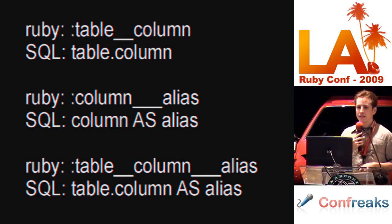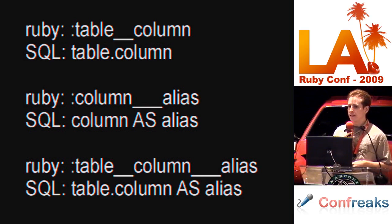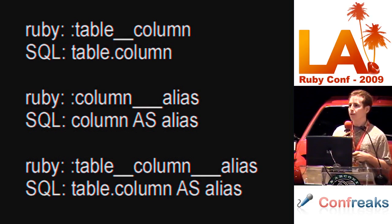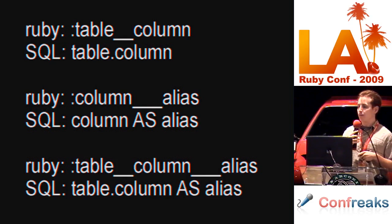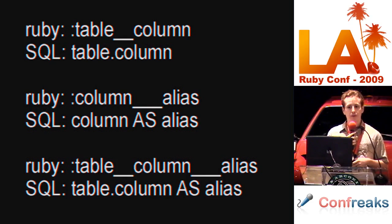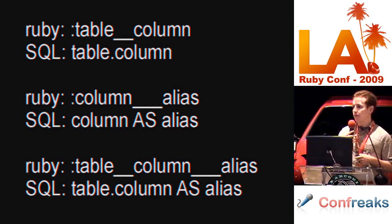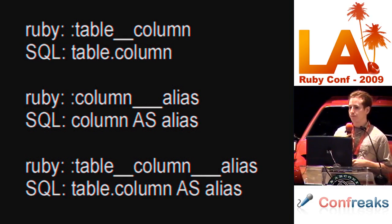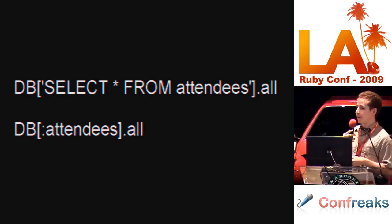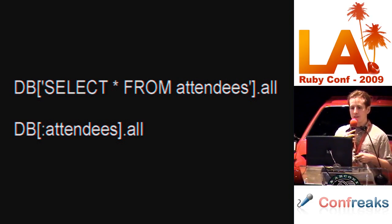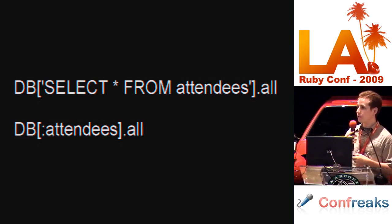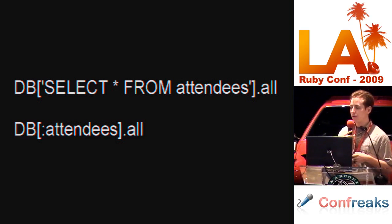Sequel code is very concise. One trick Sequel uses is that it allows you to use a single symbol to contain both the table and the column by separating them with a double underscore. It also allows you to use a single symbol to contain both a column and an alias by separating them with a triple underscore. You can combine both approaches by using both double underscore and triple underscore in the same symbol. If you want to specify custom SQL, you can do so by calling the array access operator on the database object with a string.